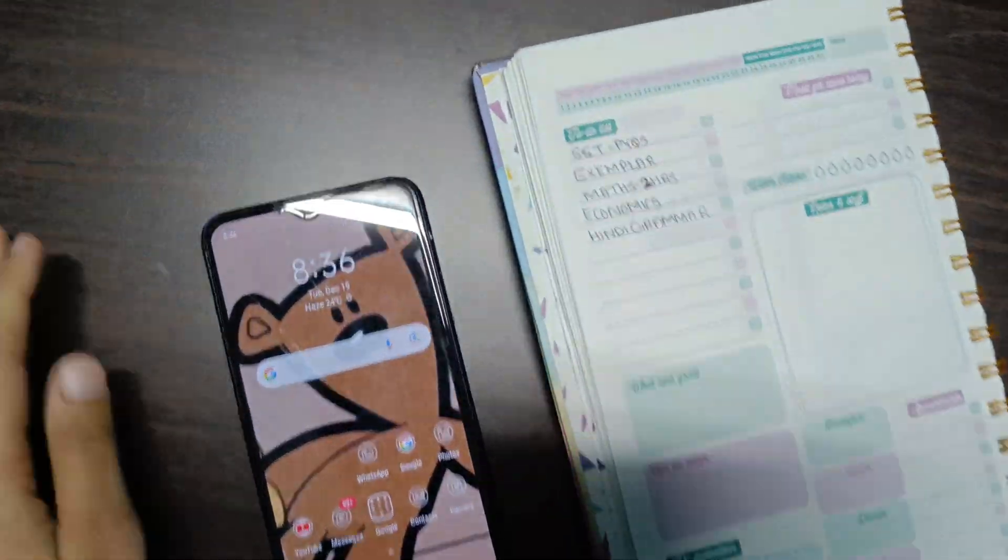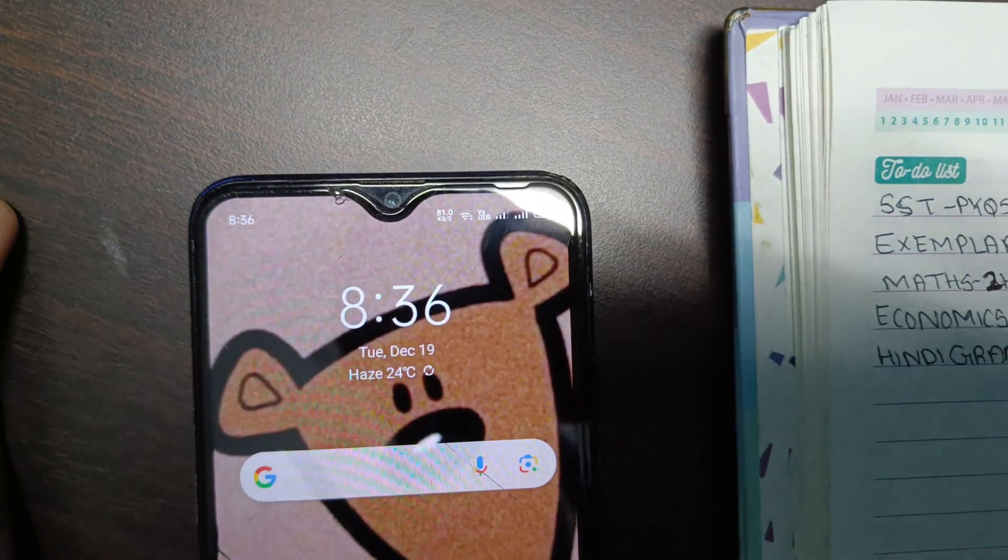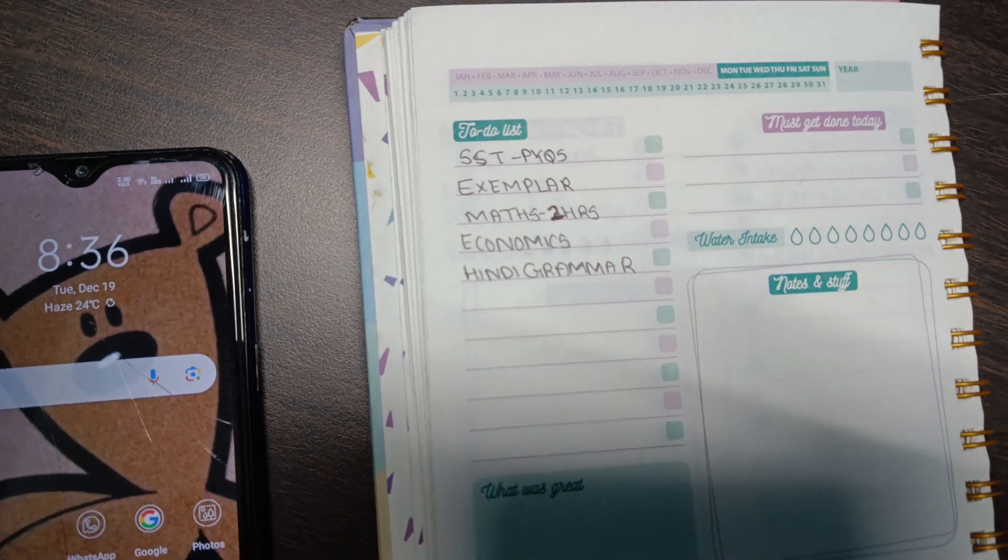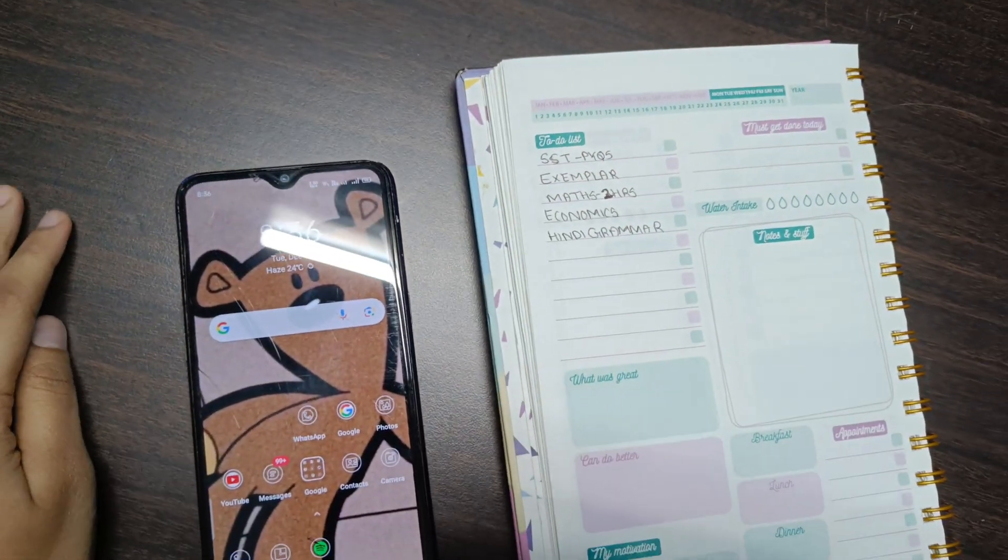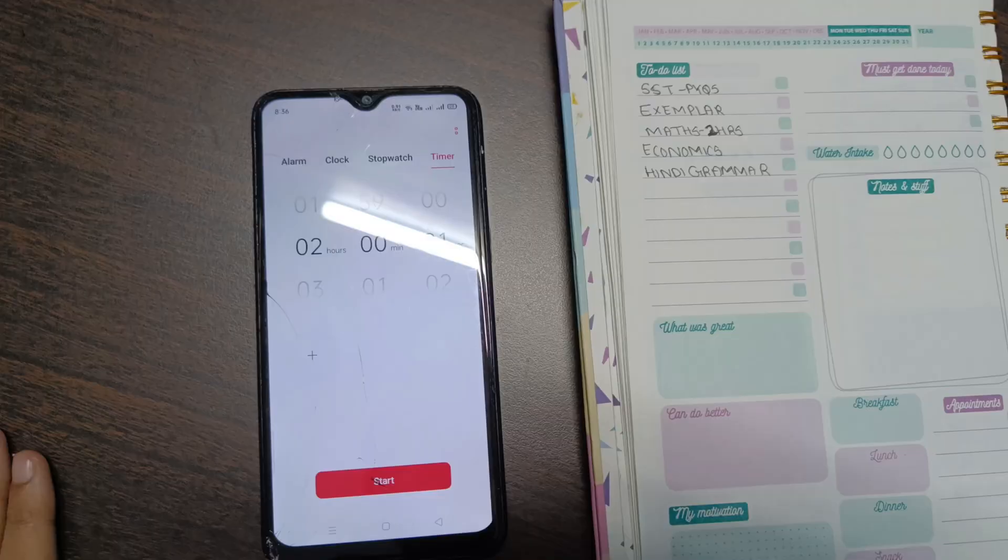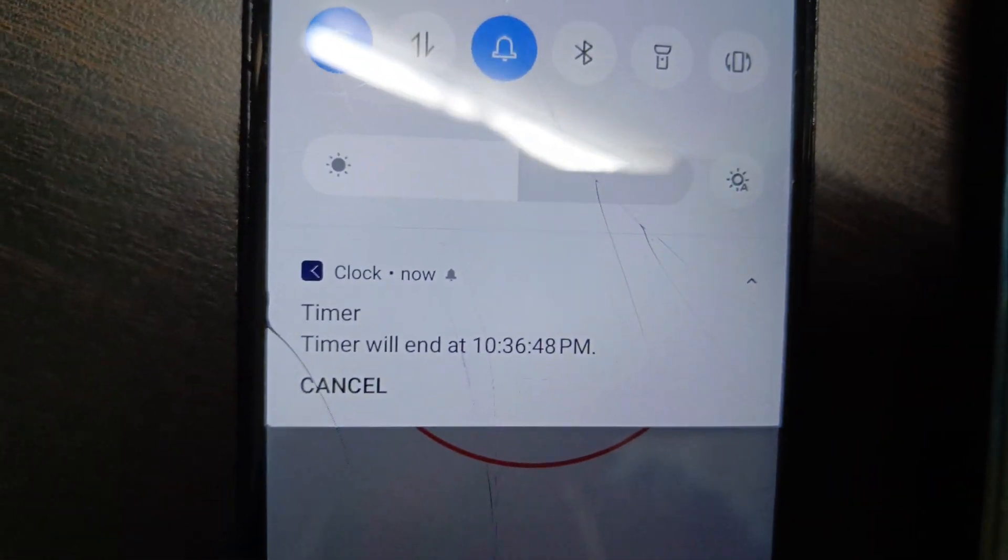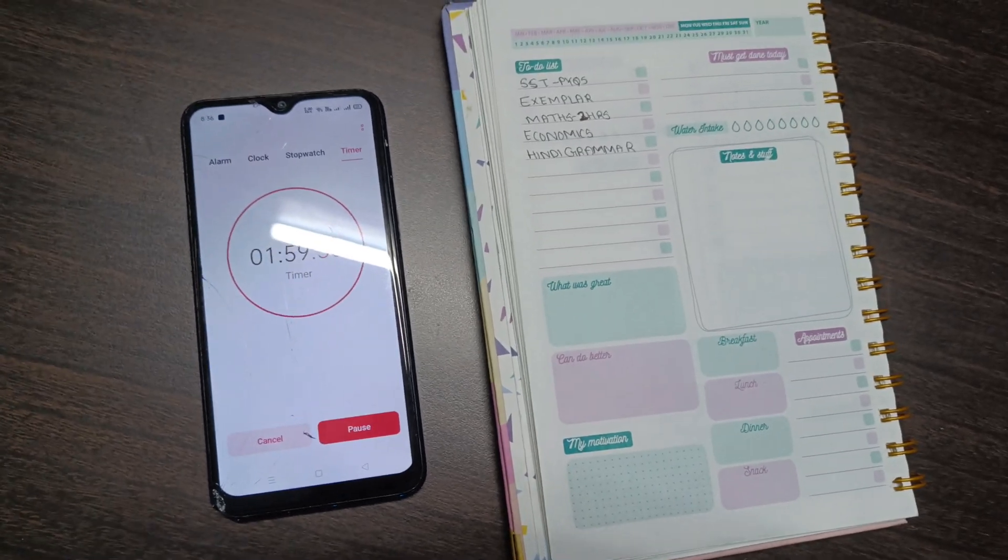Hello everyone, so today is 19 December, Tuesday, and it is currently 8:36 PM. This is my to-do list for today. Right now I'll start off with mathematics. I placed a timer of two hours, so this timer will end at 10:36 PM. Let's start off with mathematics.